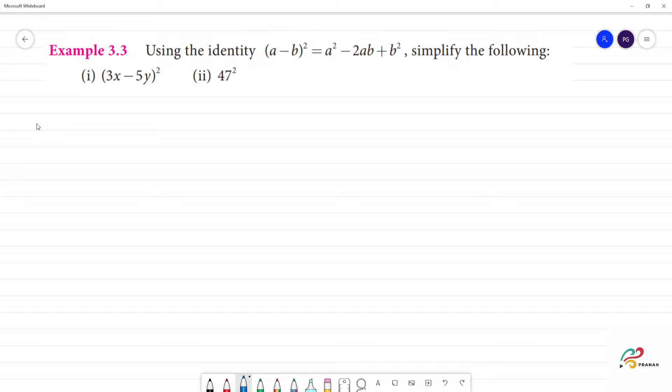Let's say the first one. First one is (3x - 5y)². So here we take a = 3x and b = 5y. This is the formula.